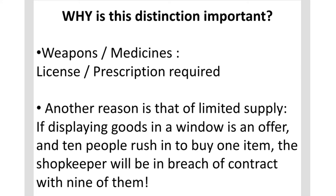The next reason is that certain items cannot be sold right away, even if you are the first and only person to ask for them, or even if the product is not in limited supply. Take a weapon — for example, a gun. In most countries you must possess a license to purchase such an item. If the law considered any display of goods as an offer capable of being accepted simply by presenting money, how would the shopkeeper be able to refuse someone without a license?